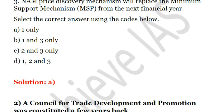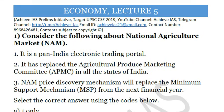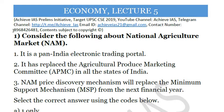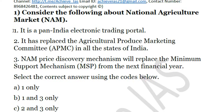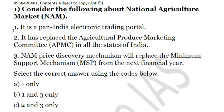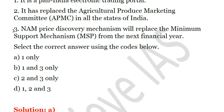We have now stopped giving explanations to every question. If you wish to get explanation PDFs, you can email us at agys21@gmail.com or contact us at 8968-4264-81. This is our official number linked with Team Achieve IAS. There is a minimum cost for PDF subscription, deliberately kept as low as possible for affordability, and also to help sustain our work.